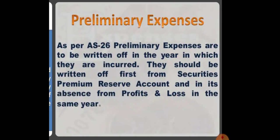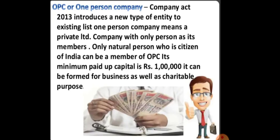Preliminary expenses are written off in the year in which they are incurred. As per Accounting Standard 26, they should first be written off from the security premium reserve — as we studied earlier. If security premium reserve is not available, then they are charged to profit and loss in the same year. So a common MCQ question is: from where are preliminary expenses written off? The answer is security premium reserve account.